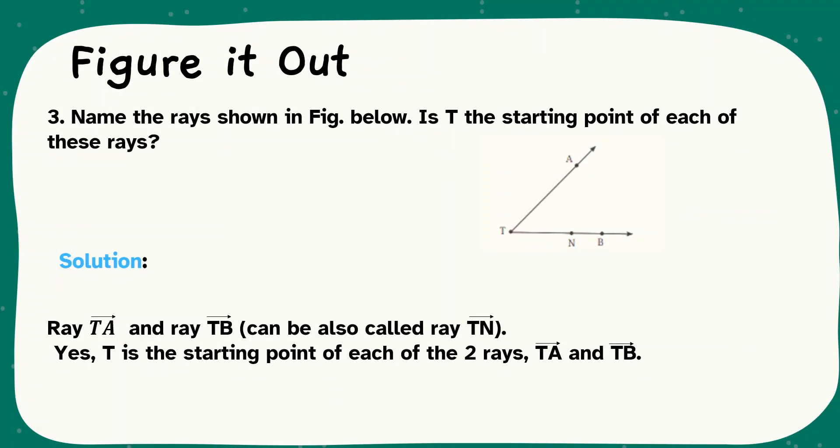Let us see question number three. Name the ray shown in figure below. Is T the starting point of each of these rays? Here, rays starting point is T. So TA is a ray. Next, TB is a ray. And also TN is also a ray which is starting from T. Yes, the answer is T is the starting point of each of the rays, TA and TB.